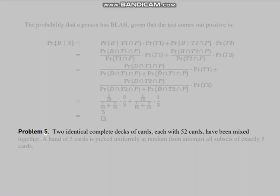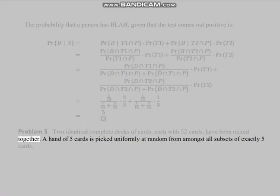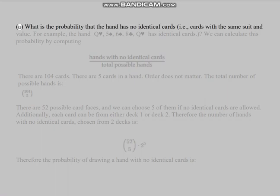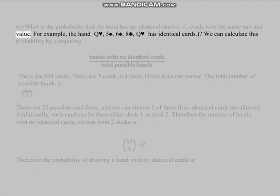Problem 5: Two identical complete decks of cards, each with 52 cards, have been mixed together. A hand of 5 cards is picked uniformly at random from amongst all subsets of exactly 5 cards. Part (a): What is the probability that the hand has no identical cards, i.e., cards with the same suit and value? For example, the hand Q-heart, 5-spade, 6-spade, 8-club, Q-heart has identical cards.